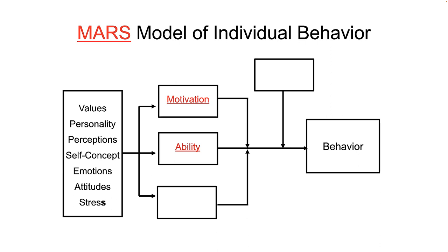Ability is the A in the MARS model, defined as the natural aptitude and learned capabilities required to successfully complete a task. Sometimes these are called competencies. In human resource management, they're known as KSAOs, where K stands for knowledge, S is for skill, A is for ability, and O is for other characteristics. KSAOs are all part of the job analysis technique in human resource management and are simply personal characteristics that lead to superior performance. Organizations engage in a high degree of person-job matching when looking at ability level, as some people are better suited for some jobs than others.